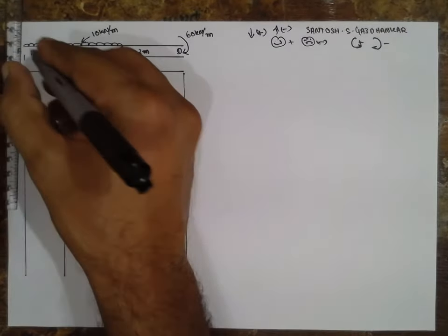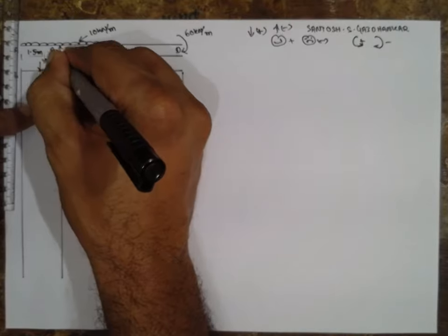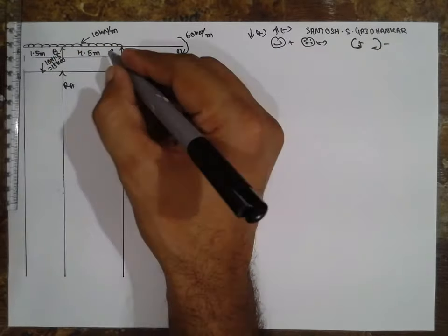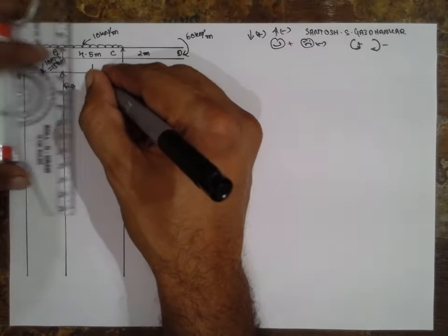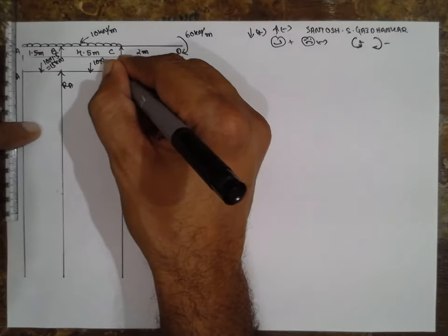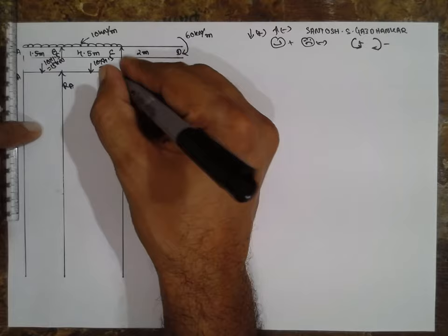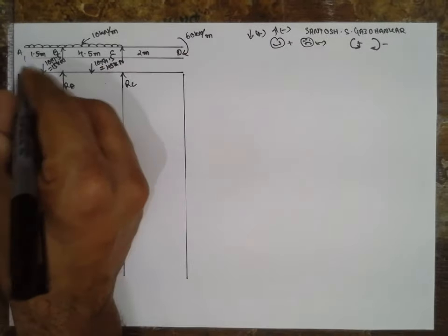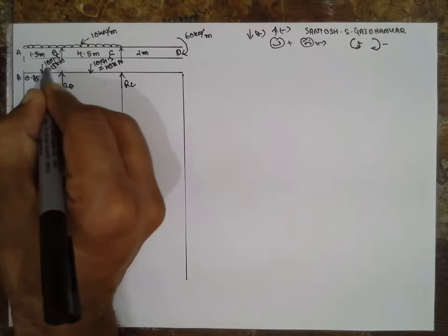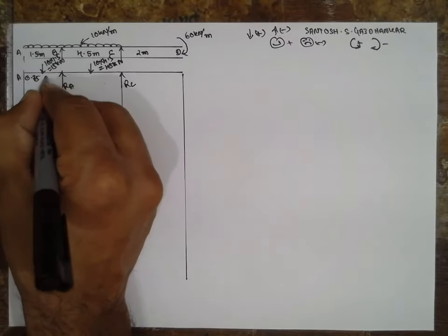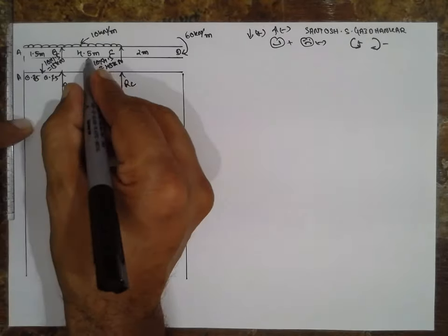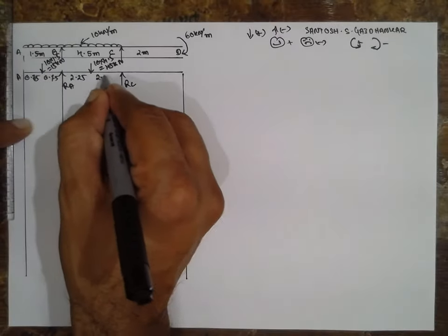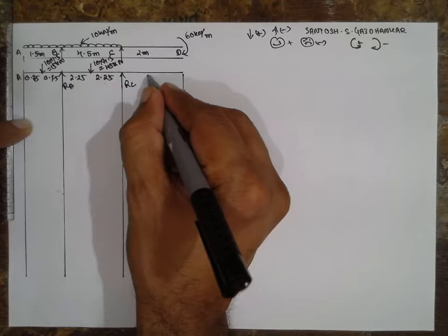Point load from the first UDL: 10 into 1.5 becomes 15 kilonewton. The second UDL gives 10 into 4.5 equals 45 kilonewton, acting exactly at the center. The 15 kN load acts at 0.75 m (half of 1.5 m) from A, and the 45 kN load acts at 2.25 m, with 2.25 m and 2 meters noted.